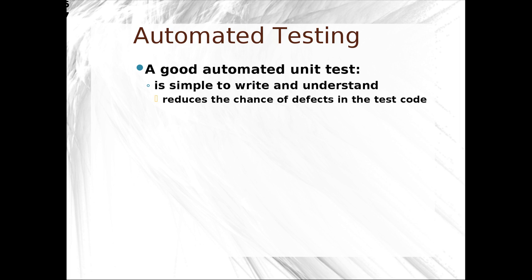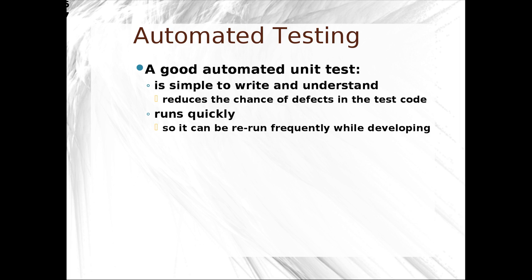The reason we want to write good unit tests is because they explain how our system will work, and they document our code. A good unit test is simple to write and understand. Understanding is important because it communicates to other developers how the code is supposed to be used. By keeping it simple, we reduce the chance of defects. Tests should also be small because the more lines of code we get, the more defects we tend to get.